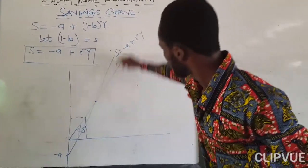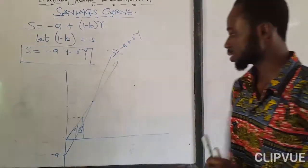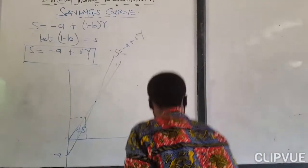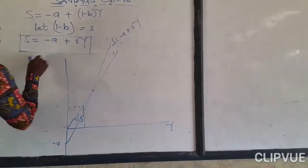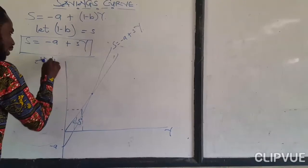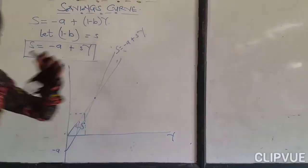It starts from here to here and it cuts the 45 degrees line here. Here is our income, and here is aggregate demand or aggregate expenditure.